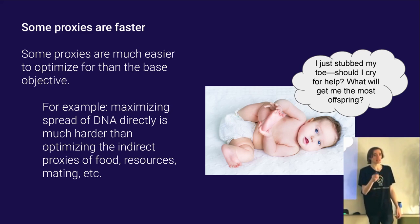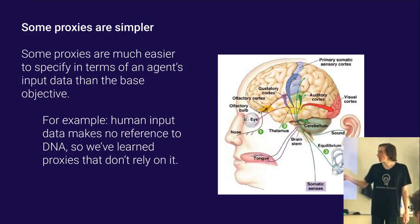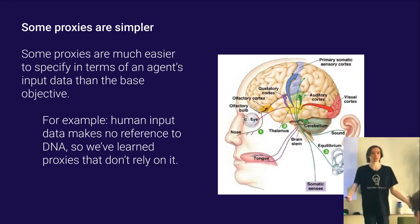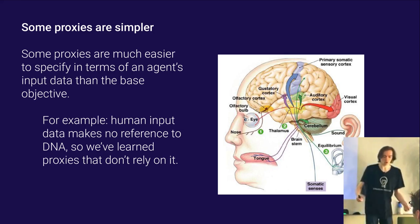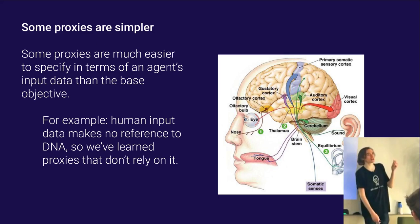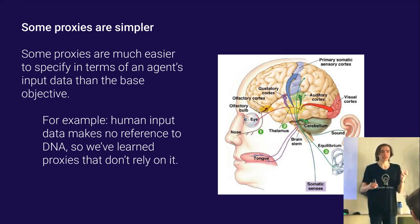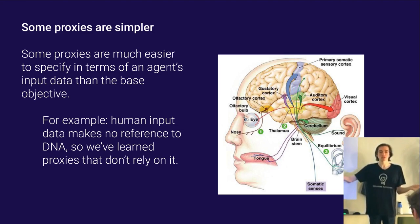If we're training on something complex and difficult to specify in terms of the agent's input — like 'pass your DNA on to the next generation' — it's not going to learn to care about that. It's going to learn to care about reducing pain, because that's much more accessible and doesn't rely on complex difficult optimization to determine how to optimize it. Some proxies are also simpler: pain is extremely accessible in terms of the baby's input data — the baby can just detect something happened to its leg. So we should expect the proxies learned are accessible and simple in terms of the data the model has access to, because computation is finite and must be rationed.